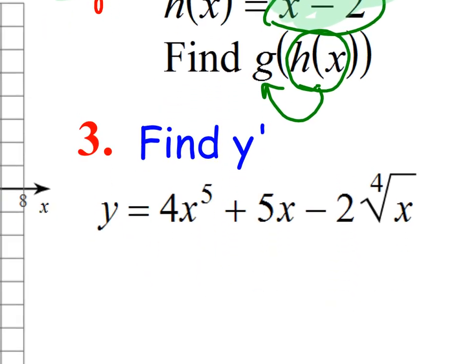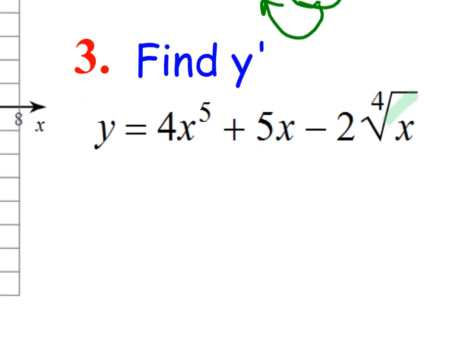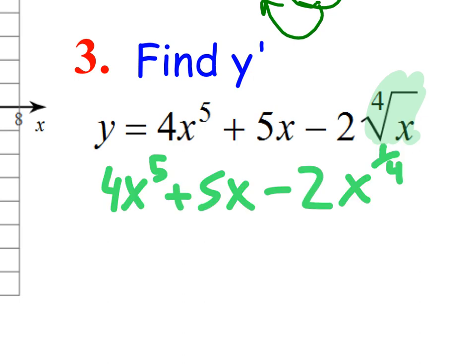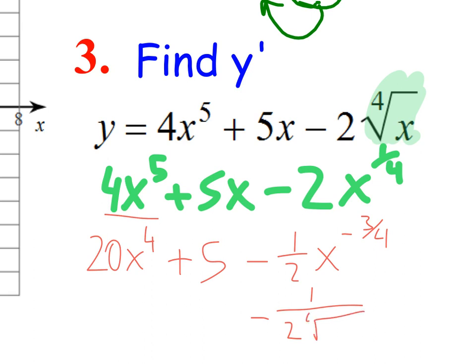And then the last one, find the derivative. To find the derivative of this one's kind of easy: 5 times 4 is 20, so it's 20x to the 4th power. 5x is just 5, and then for the next one minus 2 times 1/4, which is 1/2, and 1/4 minus 1 is negative 3/4. Typically we don't like to leave it that way, so the last term can be written as 1 over 2 times the 4th root of x cubed. So 20x to the 4th plus 5 minus 1 over 2 times the 4th root of x cubed.